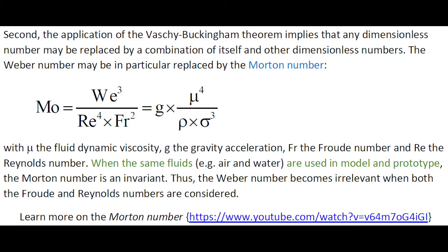Second, the application of the Buckingham theorem implies that any dimensionless number may be replaced by a combination of itself and other dimensionless numbers. The Weber number in particular may be replaced by the Morton number, which includes a definition based upon the Froude and Reynolds numbers. When the same fluids, for example air and water, are used in models and prototypes, the Morton number is an invariant, and thus the Weber number becomes irrelevant where both the Froude and Reynolds numbers are considered.